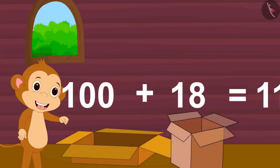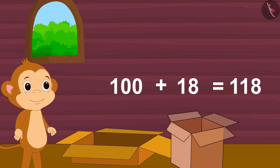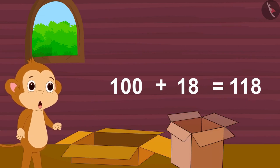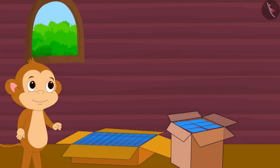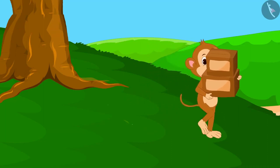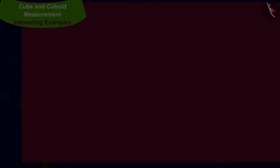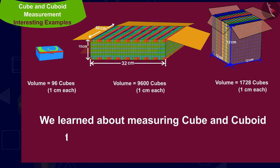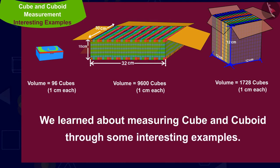I can take a total of 118 compass boxes by filling both these boxes. Babban filled 118 compass boxes and began walking towards the village. In this video, we learned about measuring cube and cuboid through some interesting examples. In the next video, we will look at some of the misconceptions related to this.